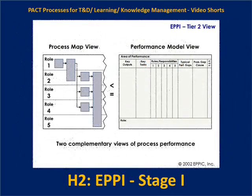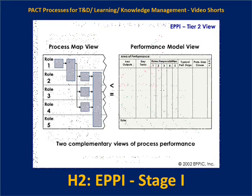We can use process maps — the swim lane type — or performance models to capture both the current state and the future state.